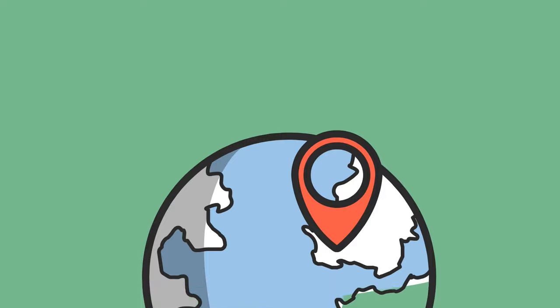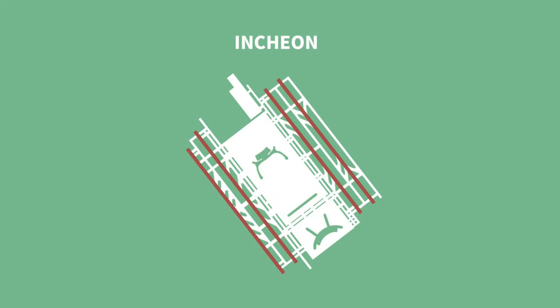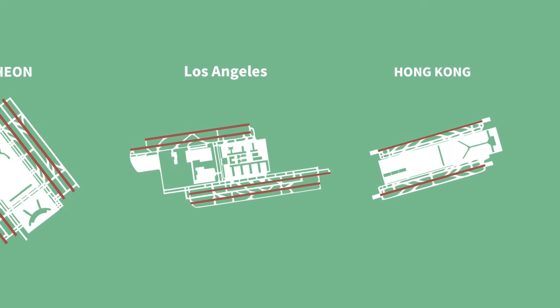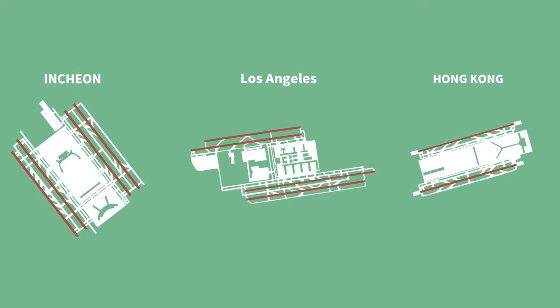Representative hub airports around the world, such as Incheon, LA, and Hong Kong, are all operated in the form of parallel runways with aprons and terminals in the center.